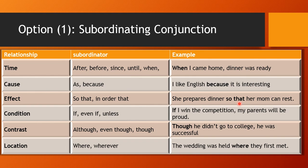For condition: if, even if, unless — 'If I win the competition, my parents will be proud.' I can switch to 'My parents will be proud if I win the competition.' For contrast — in complex sentences we use: although, even though, though — 'Though he didn't go to college, he was successful.' I can say 'He was successful though he didn't go to college.' For location: where, wherever — 'The wedding was held where they first met.' Here 'where' comes in the middle always.